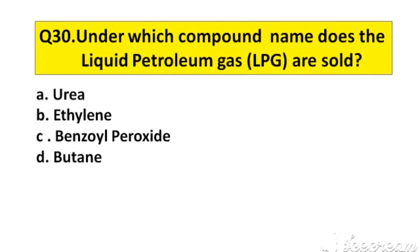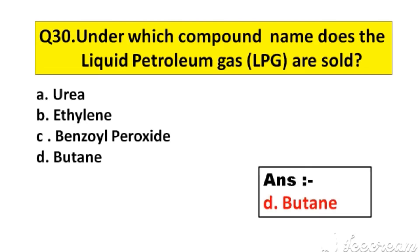Question number 30. Under which common name is liquid petroleum gas sold? Option A: Urea, B: Ethylene, C: Benzoyl Peroxide, D: Butane. The right answer is option D: Butane. Hope this video is very useful for you. If you feel the same, please like and comment, and don't forget to subscribe to my channel for more videos. Thank you.